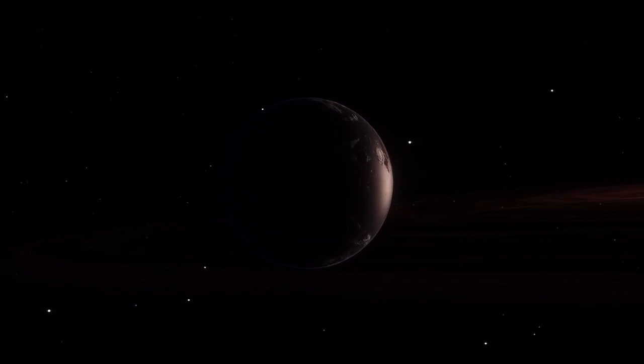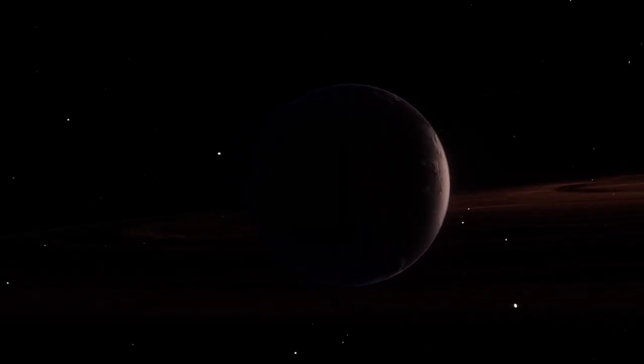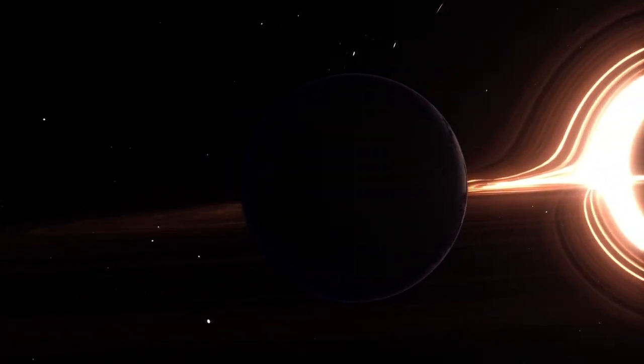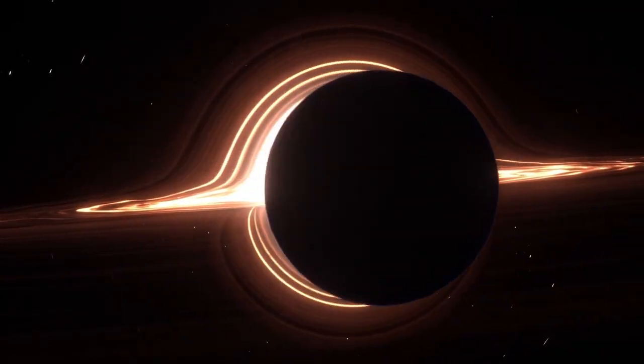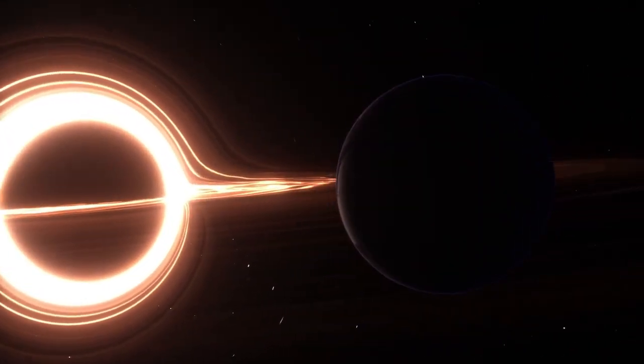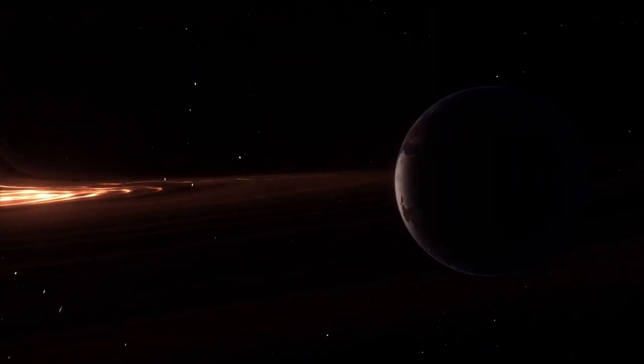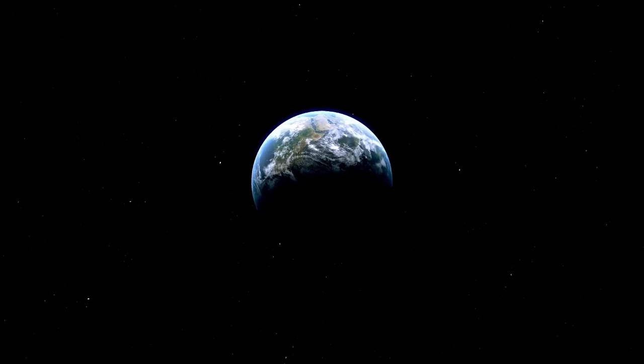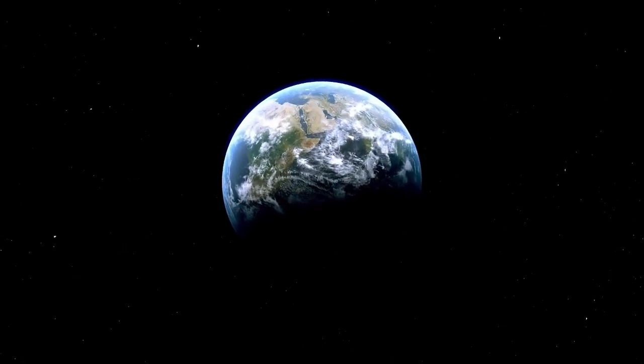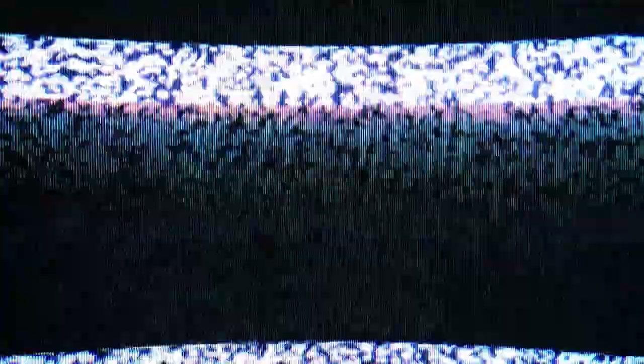That planet is Kepler-70b. This world is the very definition of cosmic torment, a place forged in fire and stripped by fury. It sits over 4,000 light-years away from Earth, hidden deep within a region of space so cold and vast that it's hard to imagine anything surviving there. And yet, against all odds, something does.